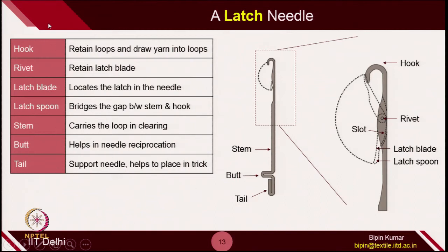Now let's see the functioning of each part of the needle. The hook retains the loop and draws yarns into the loop. The rivet allows the latch to slide, close the hook, and open the hook. The latch blade and latch spoon are also important segments — the latch spoon helps to close the hook securely so the old loop does not go back inside once it comes out, and the blade goes inside the slot to remain stable during the opening and clearing process. The stem is the point where the old loop slides. The butt is the element that interacts with the cam jacket, and the tail is the supporting part that helps fix the needle inside the bed.